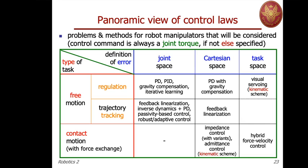The same story can be repeated at the Cartesian level, where the error is generated with respect to a Cartesian target. For regulation we have a desired end-effector position or pose, and for trajectory tracking we present PD with gravity compensation and feedback linearization. We must deal with singularities of the kinematic Jacobian. Other methods can also be generalized, but they all share the same limitation: handling the singularity of the Cartesian-to-joint transformation.